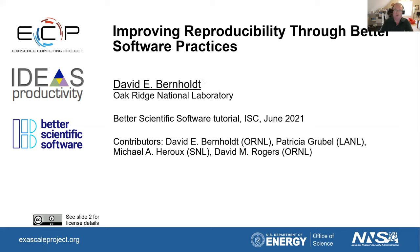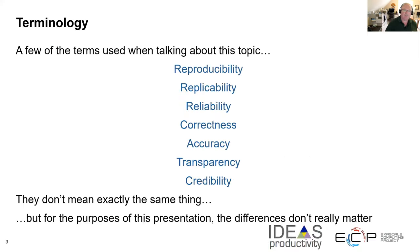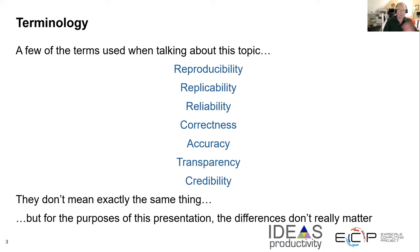So this lesson is going to be about reproducibility and the relationship with better software practices. First of all, I want to start with a bit about terminology. A lot of different terms get applied when we're talking about these kinds of things: reproducibility, replicability, reliability, correctness. They don't all mean exactly the same thing, but for purposes of this presentation, that doesn't really matter. So we're going to sort of treat this all as one concept.